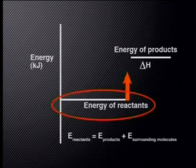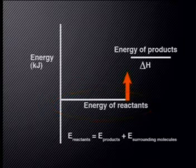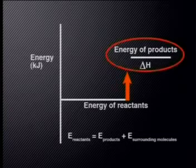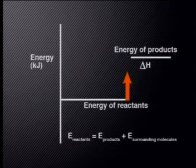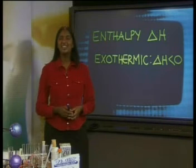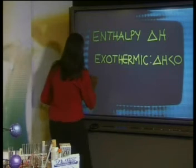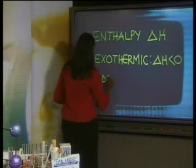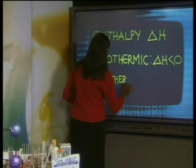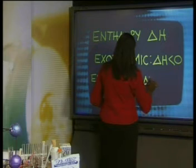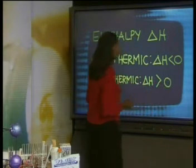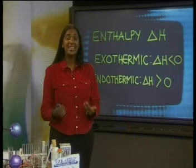Let's represent this energy change on our energy axis too. This line represents the energy of the water and the ammonium nitrate before we mix them. When we mix the two substances, energy is transferred out of the surroundings. So the energy of the products — the hydrated ammonium and nitrate ions — must be at a higher level on the energy axis. Again, energy is conserved. The energy gained by the reactant molecules when they form hydrated ions is equal to the energy lost by the surroundings. Chemists give delta H a positive value for an endothermic reaction. This makes sense since reactant molecules gain energy when they form products.